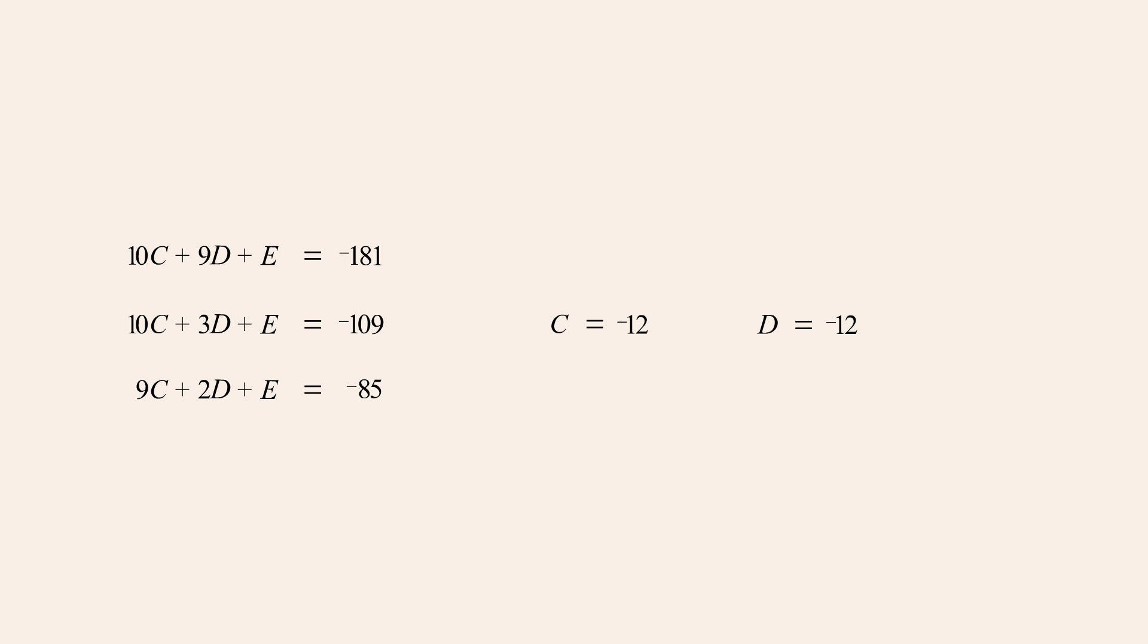The values for c and d can now be substituted into any of the original equations to find the value of the remaining variable e. Since the bottom equation has the smallest coefficients, we will use it to find the value of e. Substituting the values for c and d into this equation and completing the arithmetic, we get negative one hundred thirty-two plus e equals negative eighty-five. Adding one hundred thirty-two to both sides gives us e equals forty-seven.